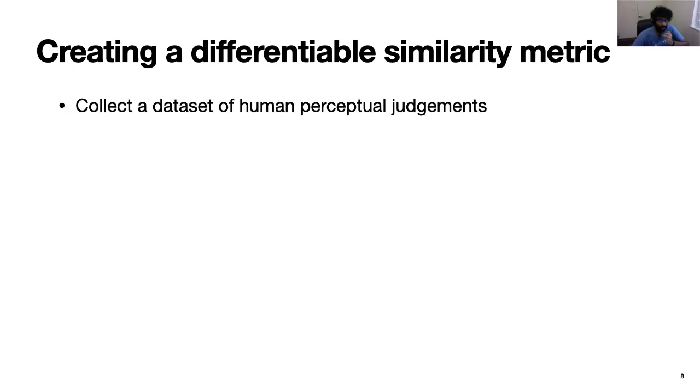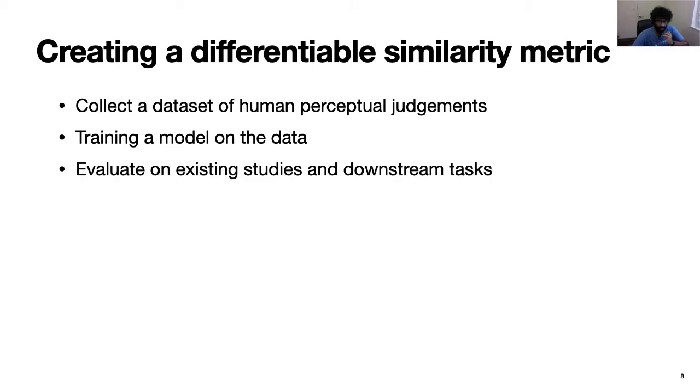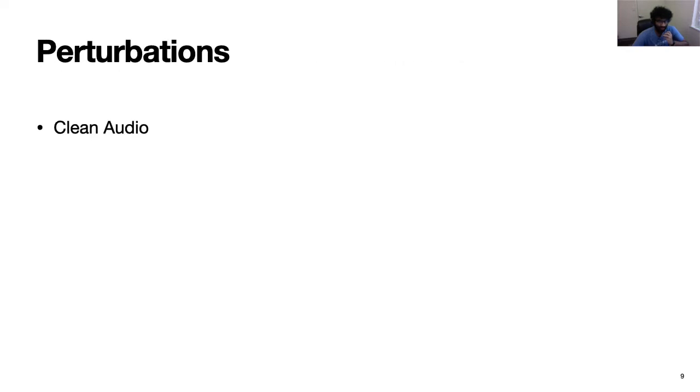So in order to create a differentiable metric that aligns well with human perception, we first create a dataset of human perceptual judgments by including various types of noises and perturbations. And then we train a model on this dataset which further becomes our metric. We evaluate our metric with existing subjective tests and show improvements as well as show an application of a metric as a loss function in speech enhancement and show significant gains. So here is how we create the dataset. We take various perturbations.